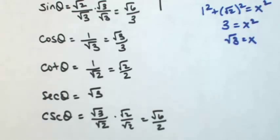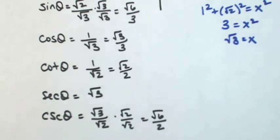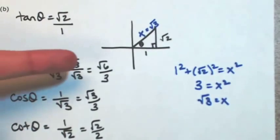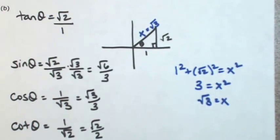If you ask me, I think that's a lot easier. From here out, anytime you're given a trig function and you know where the angle lives, just draw the right triangle.